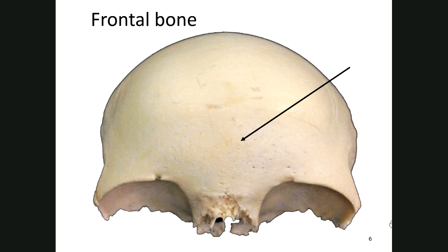The frontal bone is your forehead — not just your forehead, but also the top portion of your orbit. When taking the lab test, if it asks for the name of the bone, make sure you're writing the name of the bone. The arrow could be pointing to a specific structure on that bone. For example, if it asks 'what bone is this' and it's pointing to the eyebrow, which is the supraciliary arch, writing 'supraciliary arch' would be wrong if it's asking for the bone.